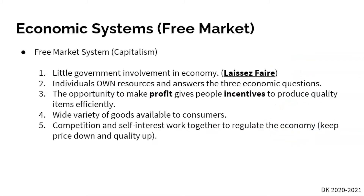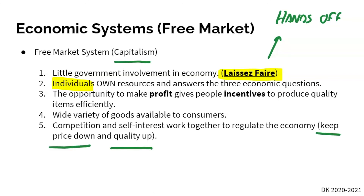Our second economic system is the free market system, or capitalism. The key concept here is laissez-faire, which just means hands off — the government stays hands off of the economy and doesn't get involved. Looking back at our three economic questions, it's the individuals who own the resources and answer the three economic questions. This is important because it allows people to make profit. If you give individuals the incentive to make money, they need to increase product quality and produce items efficiently — otherwise they'll go out of business.